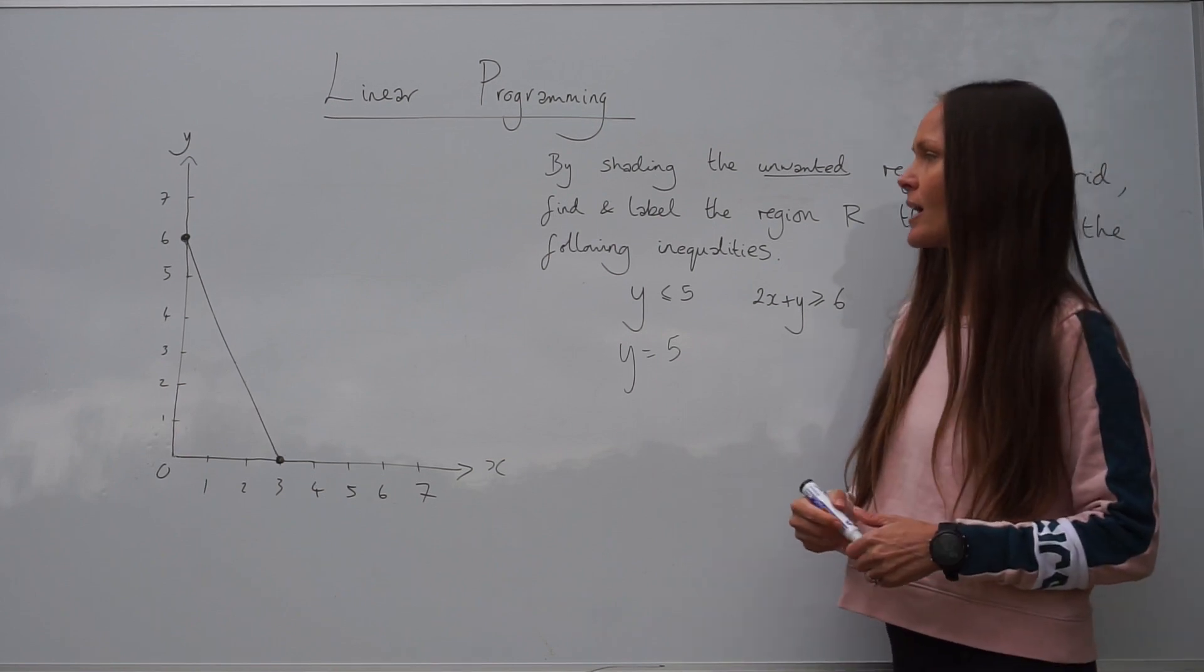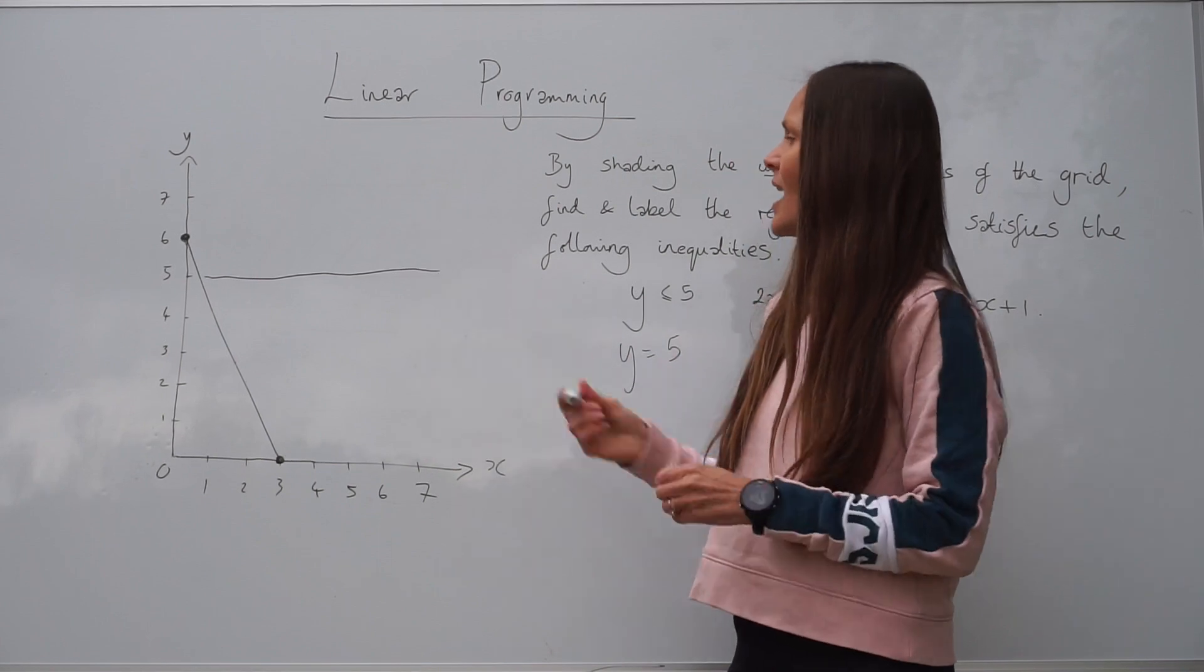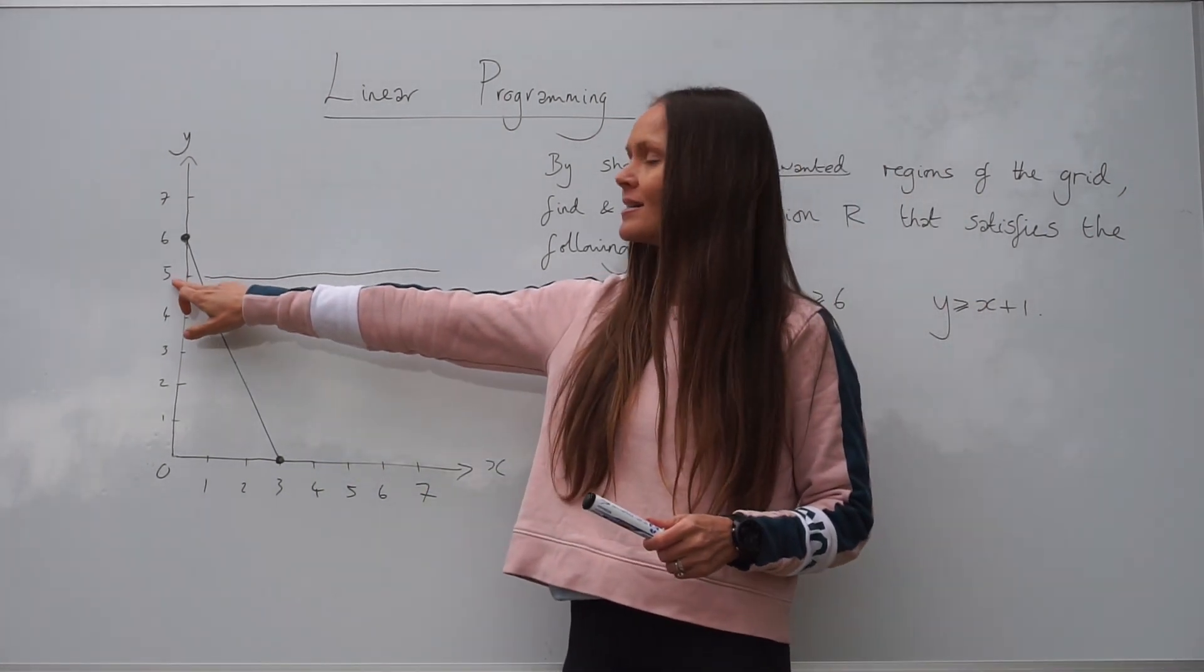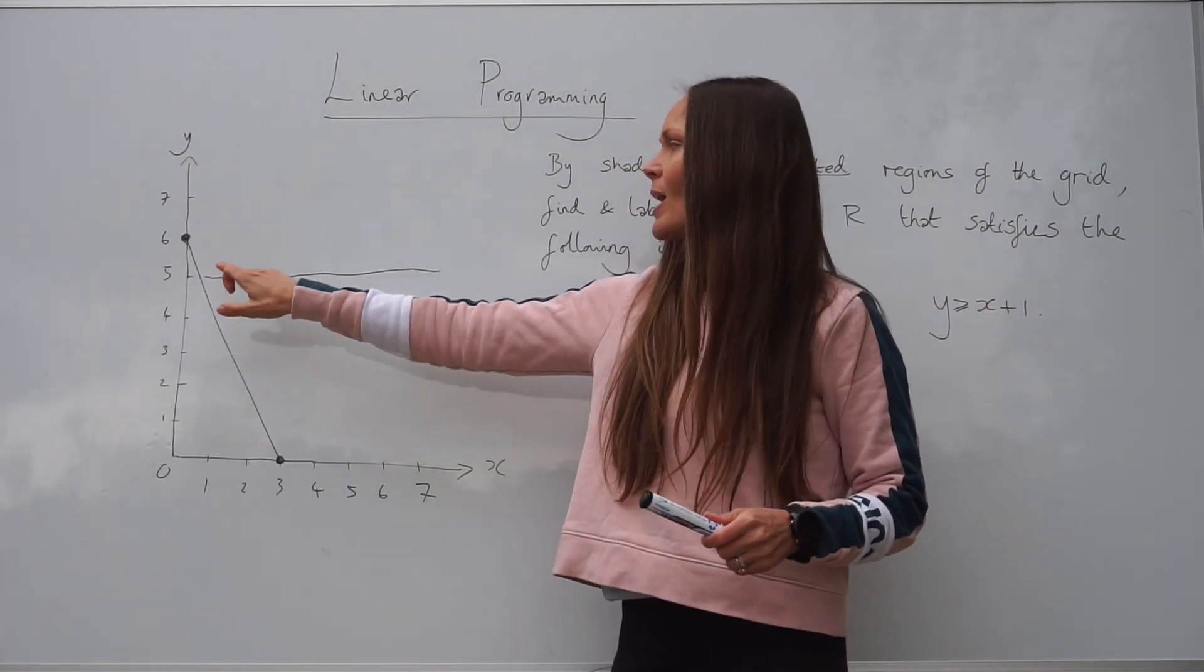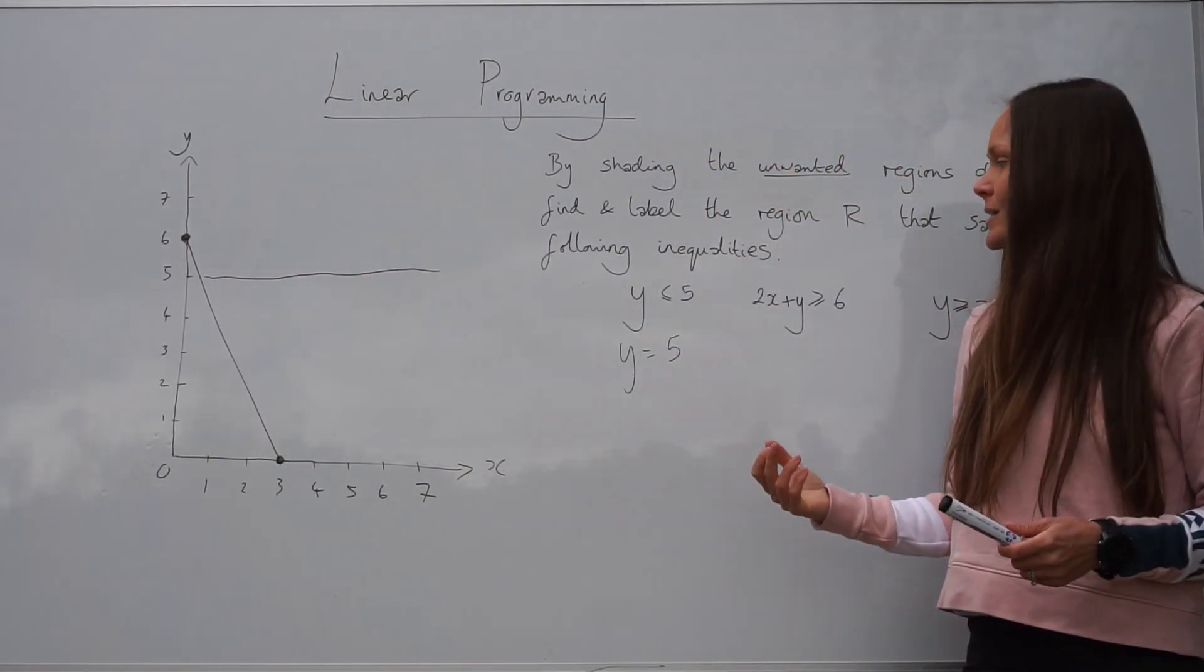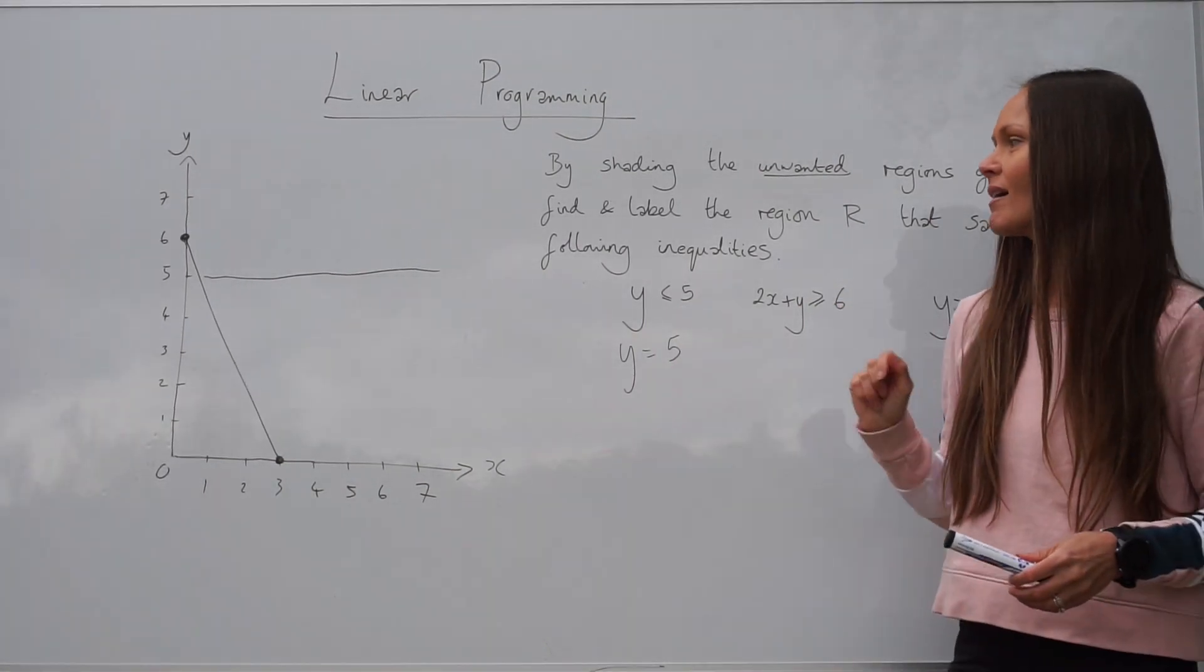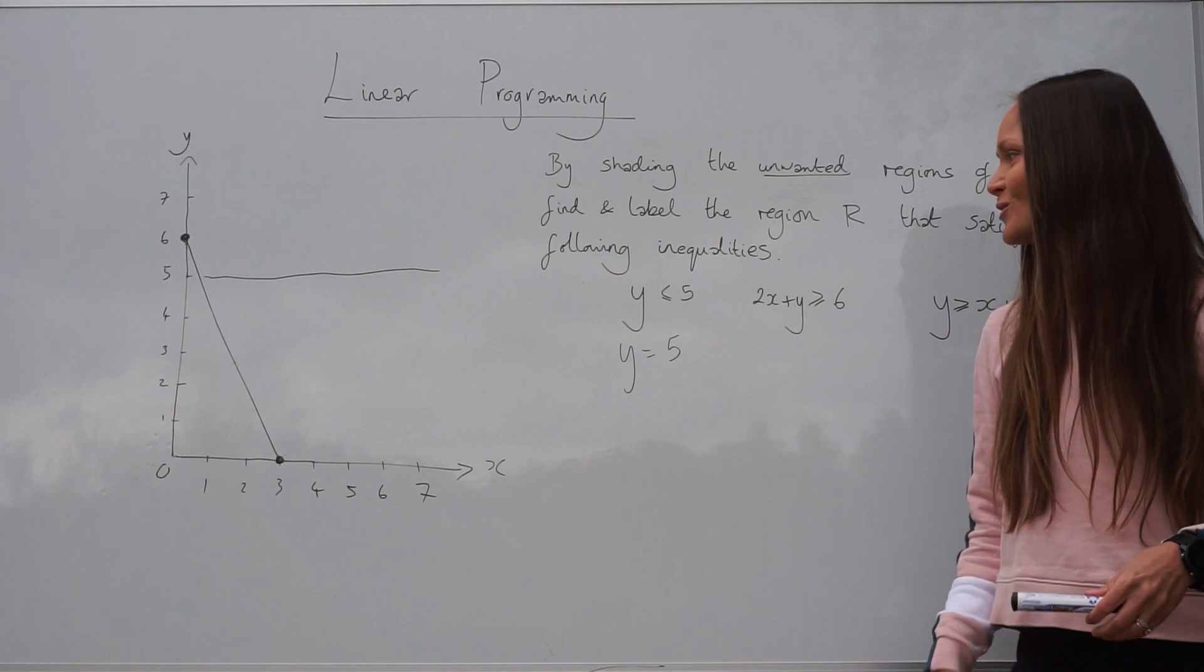So the line y equals 5 is a horizontal line that goes across your grid like this, and it crosses the y-axis at 5. So every point along this line, the y value is always equal to 5. So there's the first line. Obviously when you do it, use a ruler so it's a bit straighter than the one I've drawn there.